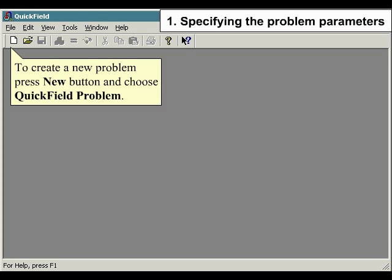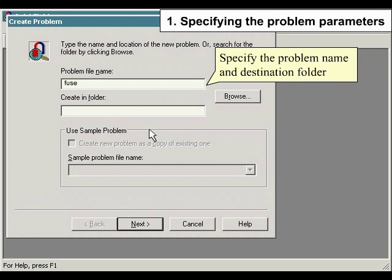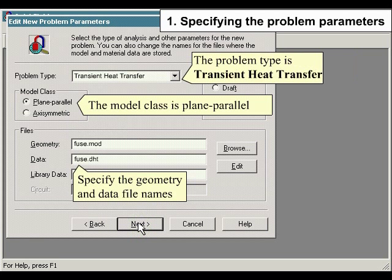Specifying the problem parameters: To create a new problem, press New button and choose QuickField Problem. Specify the problem name and destination folder. The problem type is Transient Heat Transfer and the model class is plain parallel. Specify the geometry and data file names.